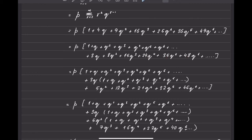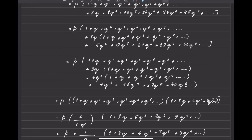In the next step I take 3q common from the second series and write it as 1 plus q plus q² plus q³ plus q⁴ plus q⁵, adding the missing terms. Originally 8q², I've written 3q², so I add 5q². Originally 15q³ and I've written 3q³, so I add another 12q³. Originally 24q⁴ — I've written 3q⁴ so I add 21q⁴, and so on.